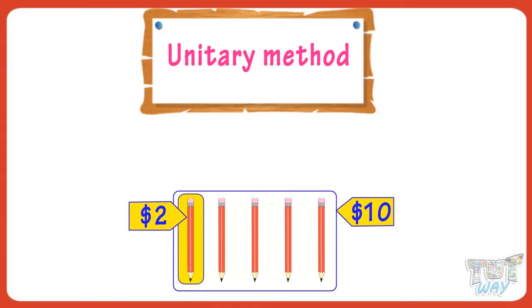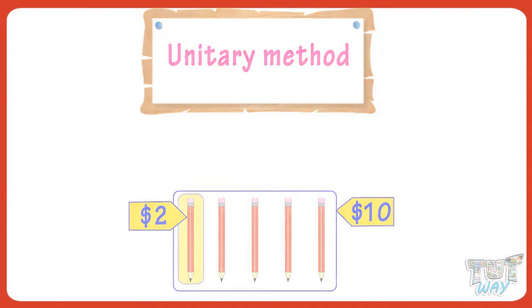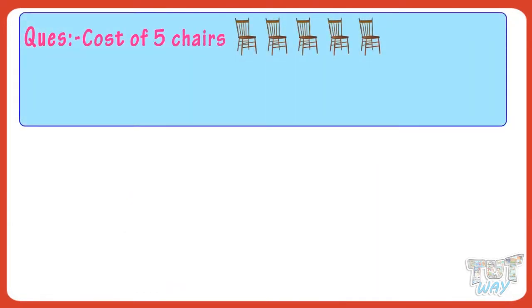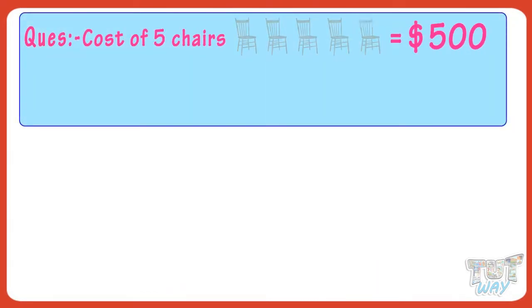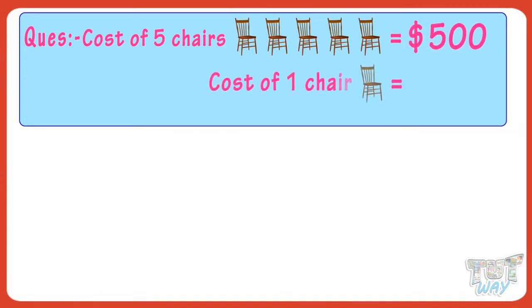Let's take an example to learn the unitary method. The cost of five chairs is given — it is $500. Then what is the cost of one chair? We have to find it using the unitary method.